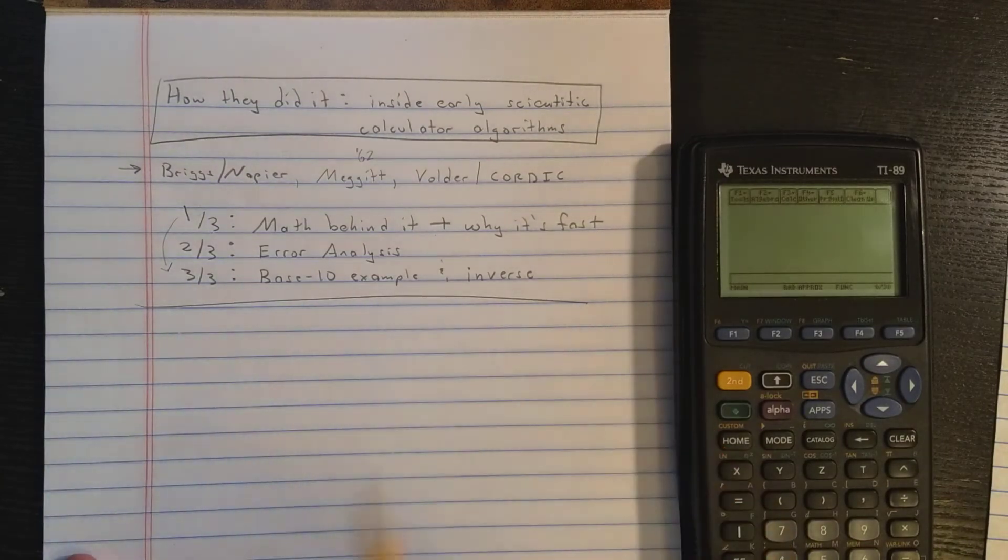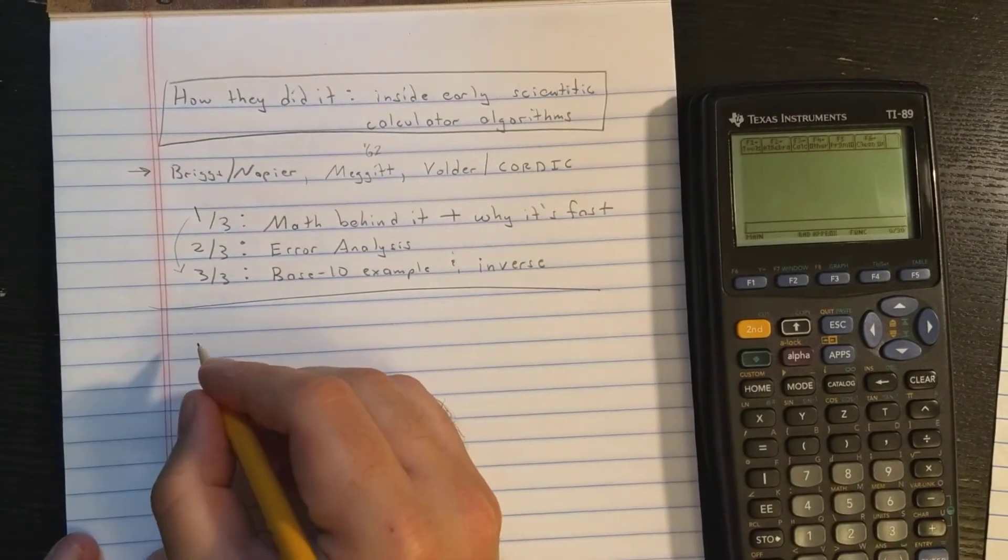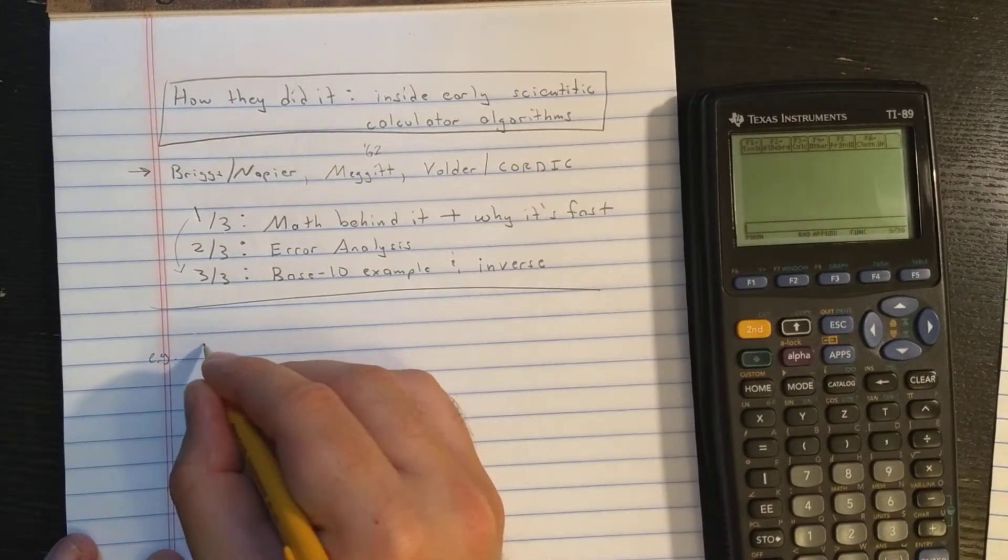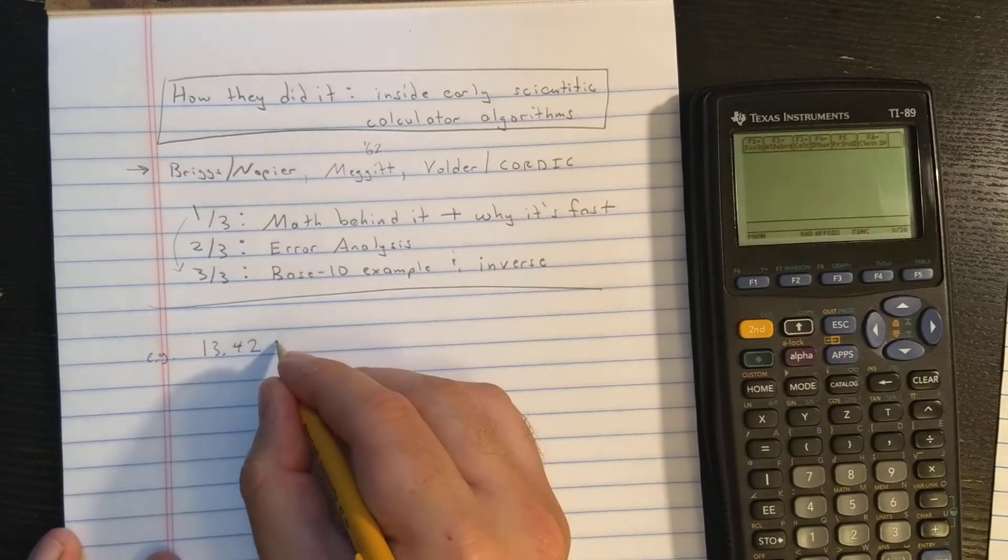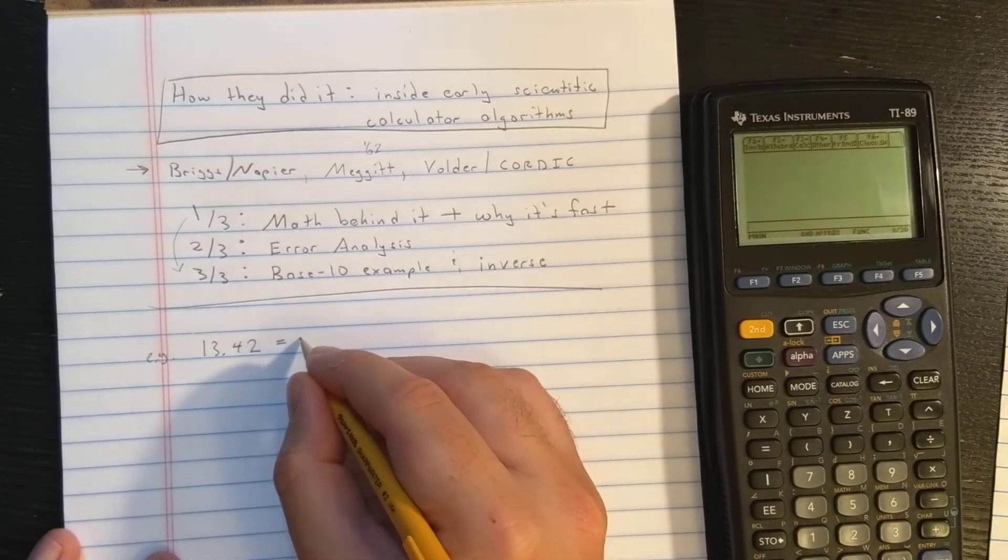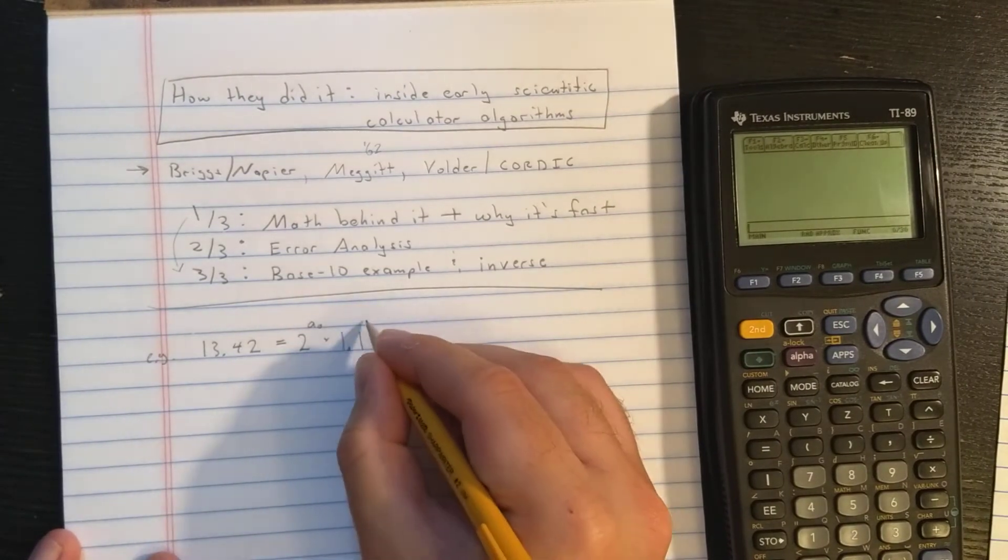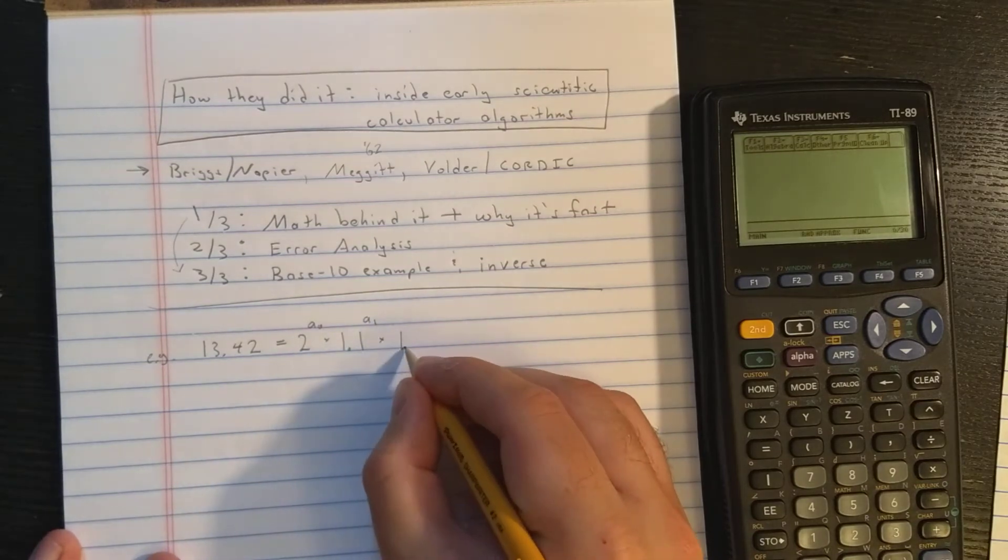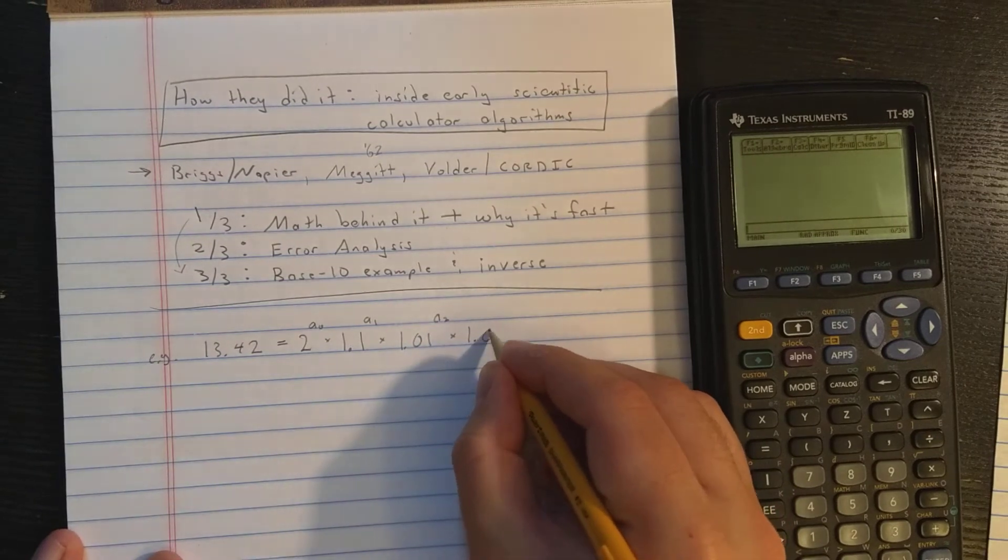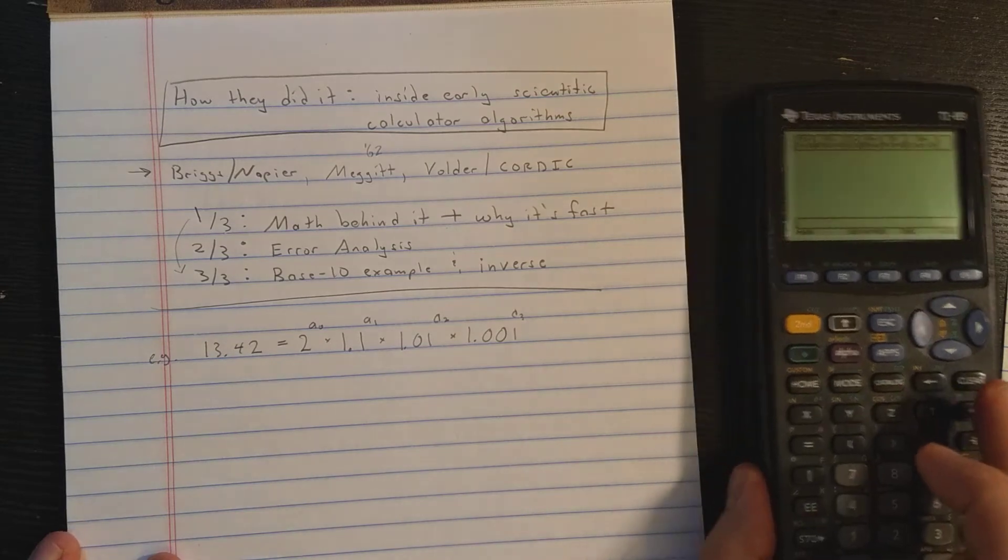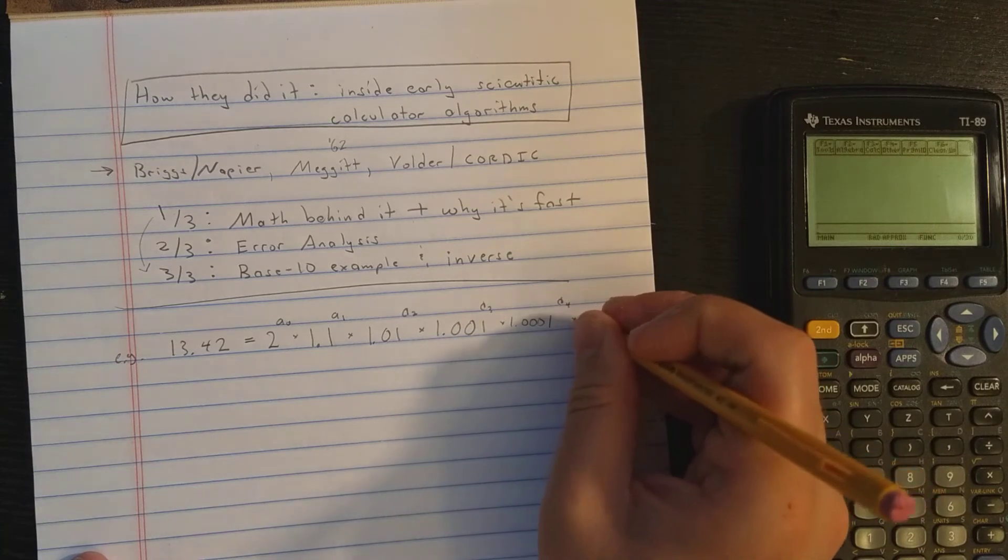Okay, so that's the plan. Let's get right to it. So the idea is this. I'm going to take a number, let's do an example where the number is 13.42. And the algorithm is based on rewriting this number in the following way. You're going to rewrite this number as 2 to some power, let's call it A0, times 1.1 to some power we'll call A1, times 1.01 to a power called A2, 1.001 to the A3, 1.0001 to the A4, and so on.